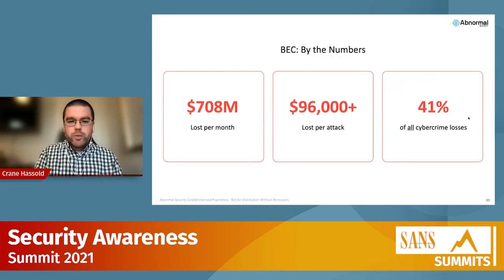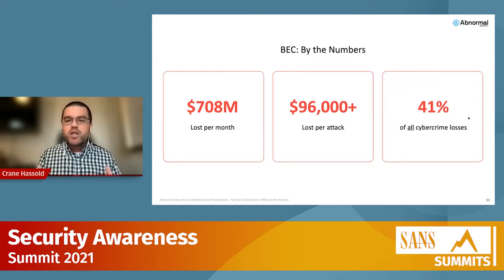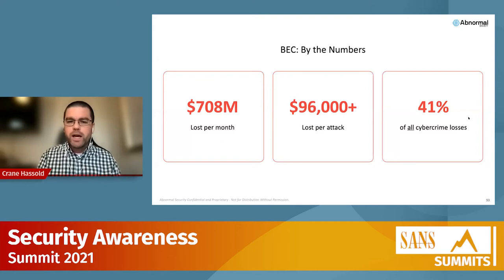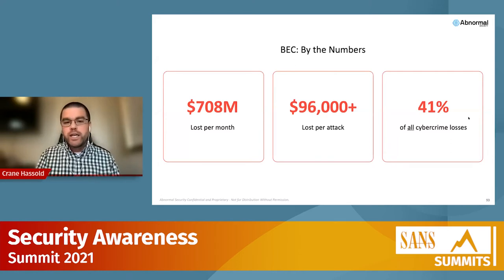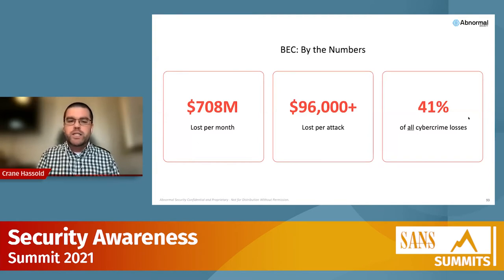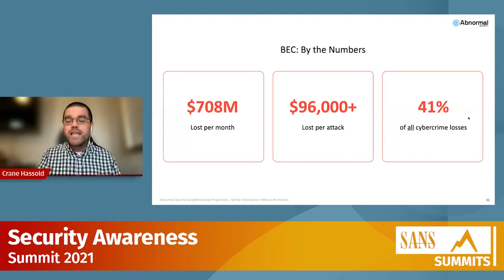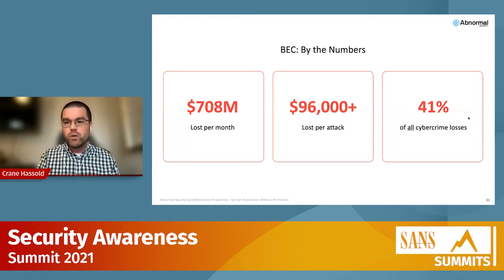Let's look at the actual losses attributed to BEC. All of these numbers are coming primarily from the FBI's Internet Crime Complaint Center, or IC3. One of the best alerts IC3 put out was in late 2019, stating that between June 2016 and October 2019, more than $26 billion had been lost to BEC attacks globally — about $708 million lost every single month. And we know that BEC losses have only grown since then.